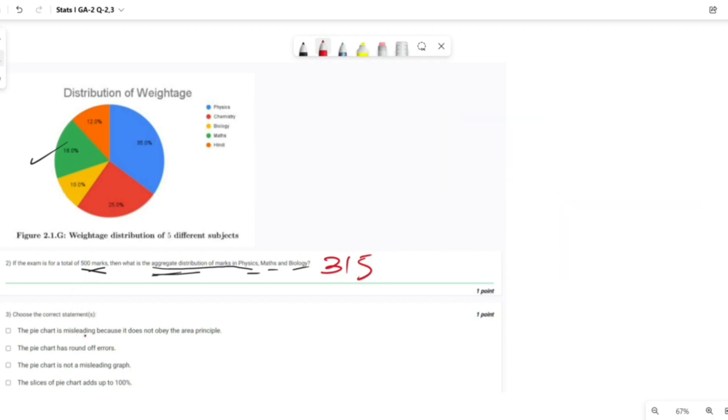Third question: the pie chart is misleading because it does not obey area principle. What is area principle? Addition of all percentage divided by total into 360 degrees should equal 360 degrees.